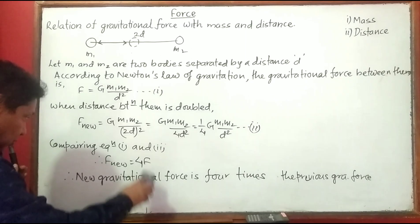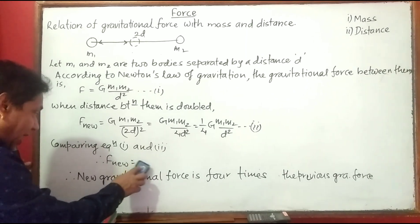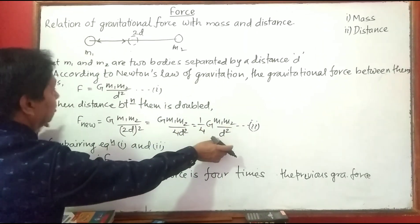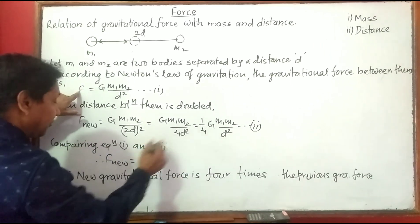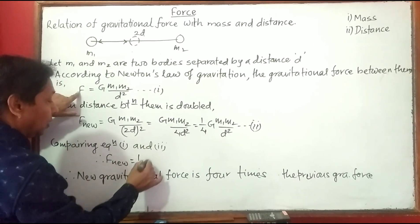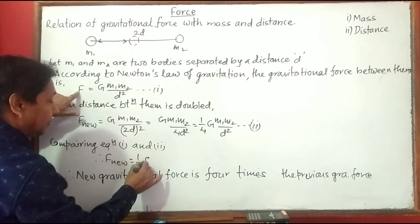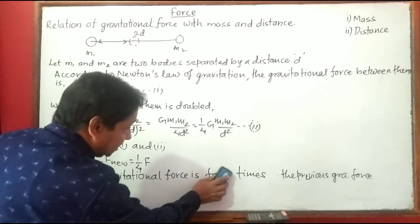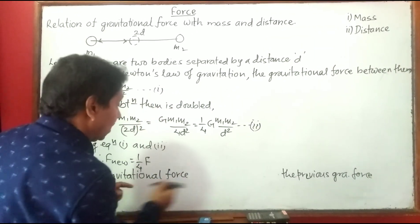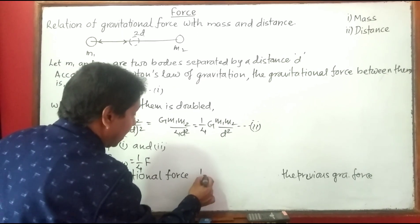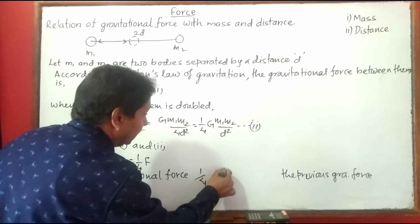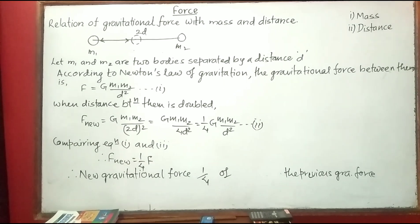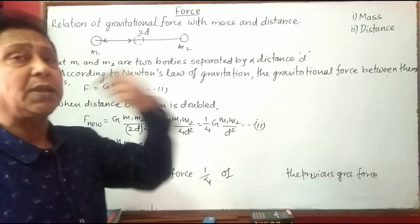When distance is doubled, G remains the same, m1 and m2 remain the same, but d becomes 2d. Comparing equation one and two: G·m1·m2 / d² can be taken as F, so F_new = (1/4)F. The meaning is: the new gravitational force is only one-fourth of the previous gravitational force. This way we can conclude.